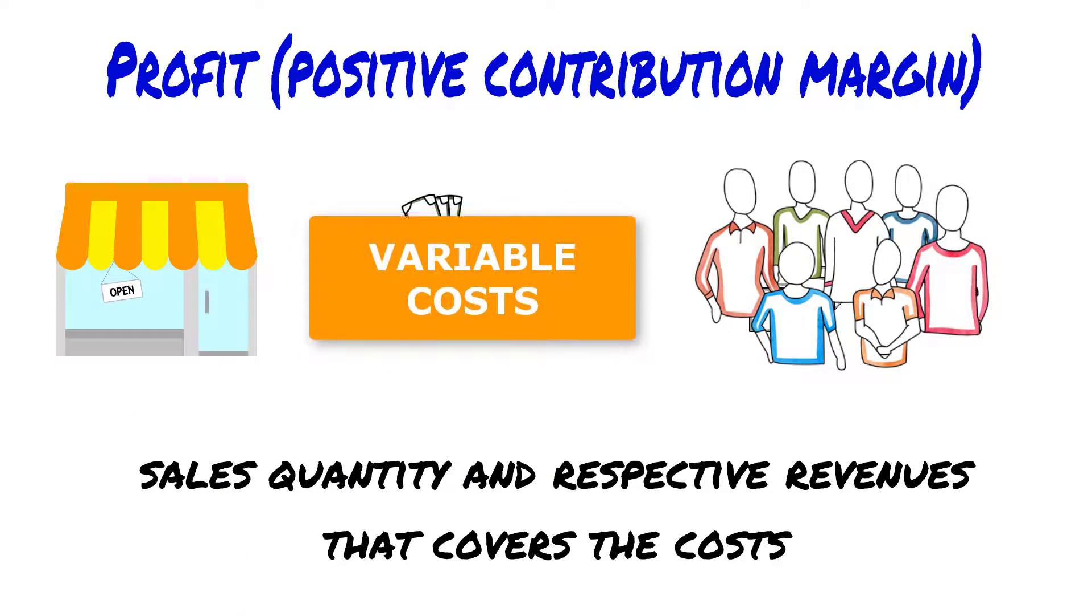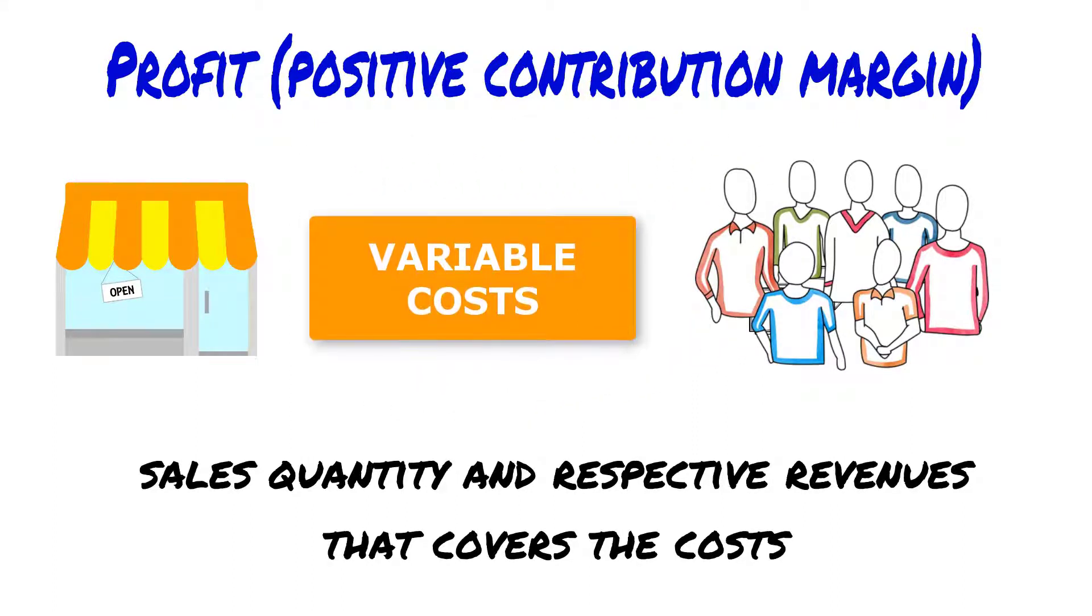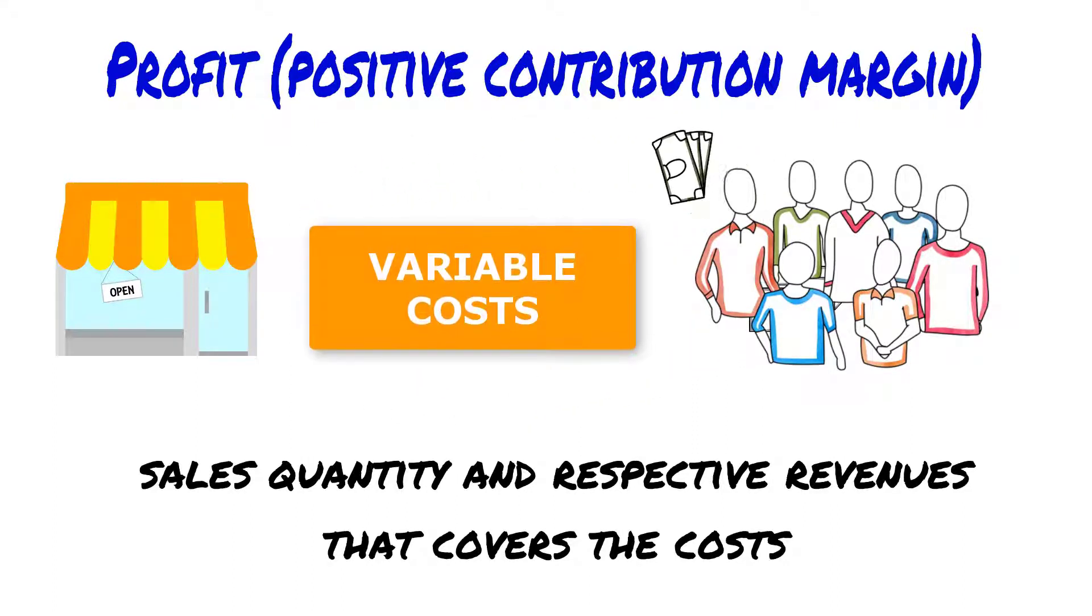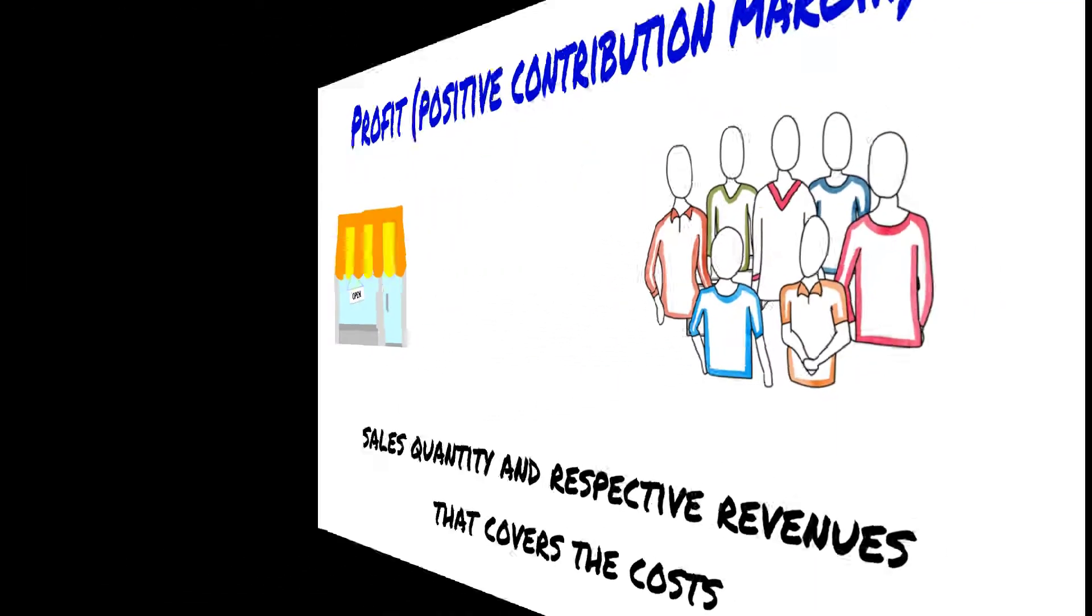Variable costs include direct costs to produce each unit, each item. The most common variable costs are raw material and components. Variable costs increase with the quantity produced.